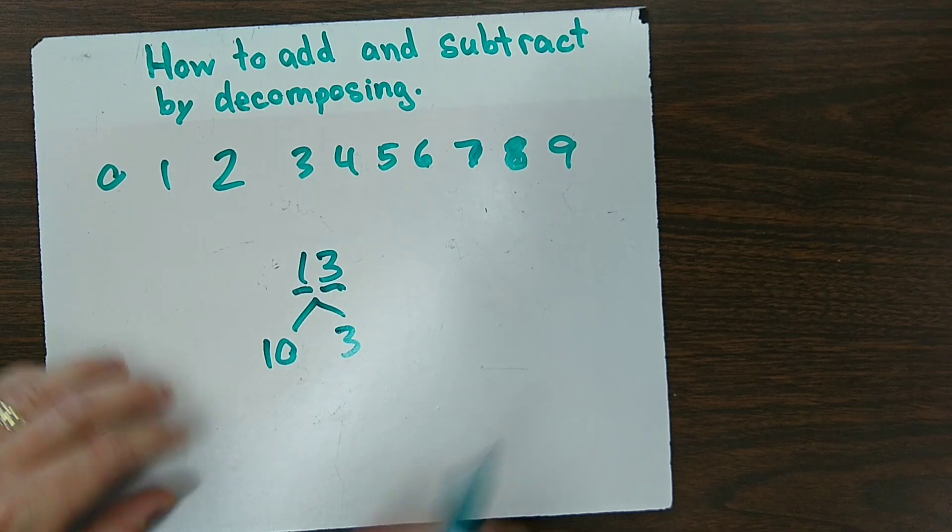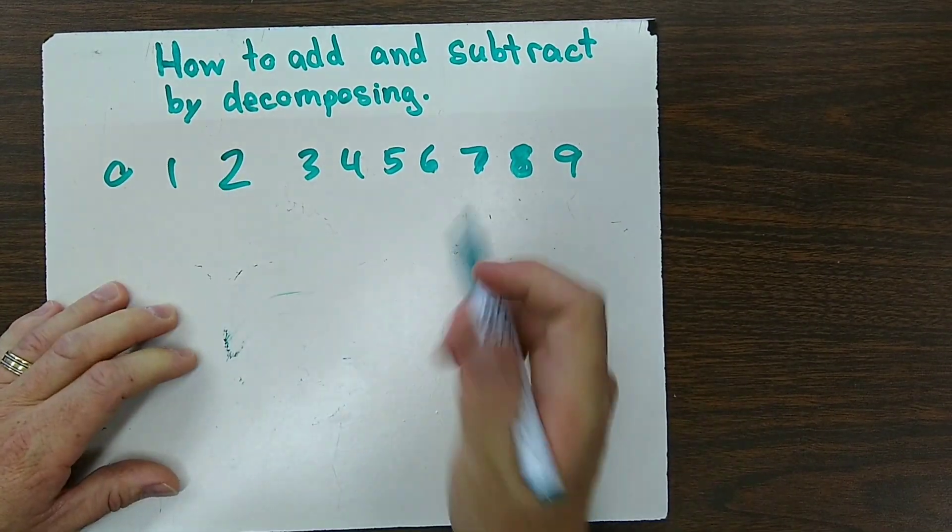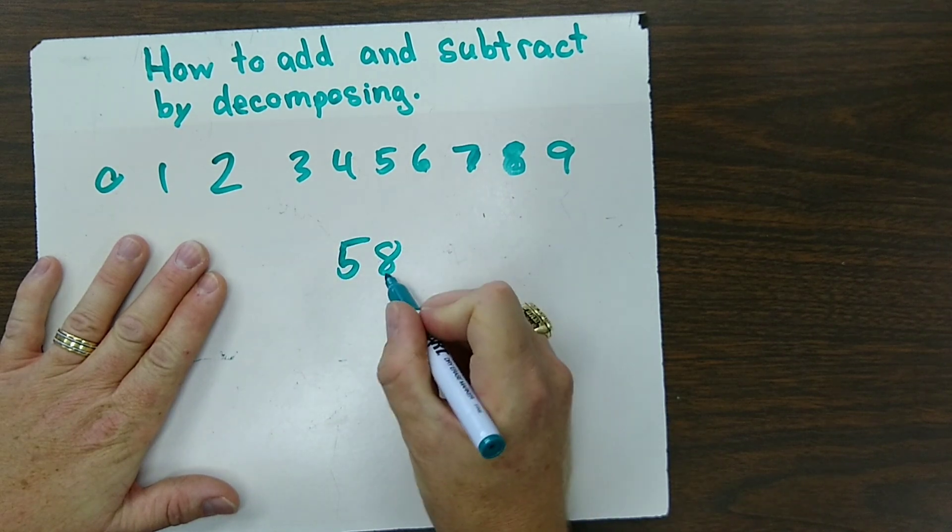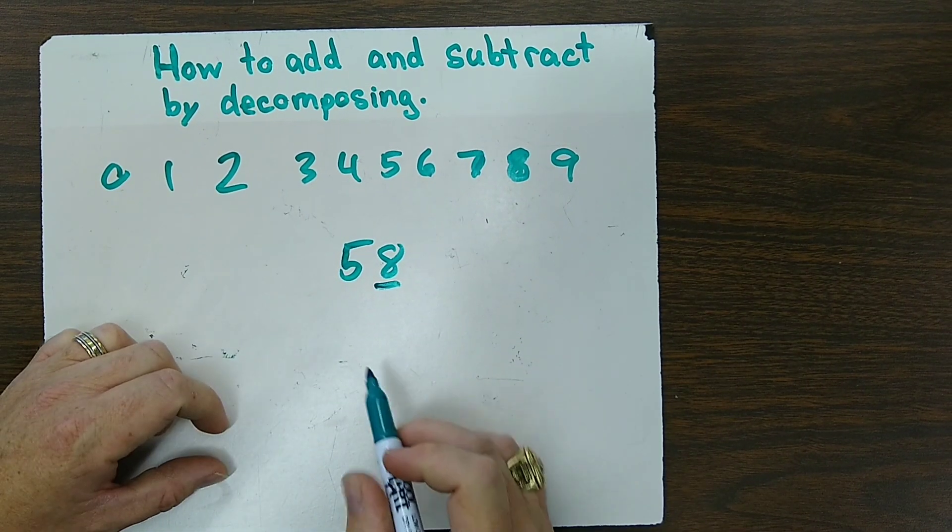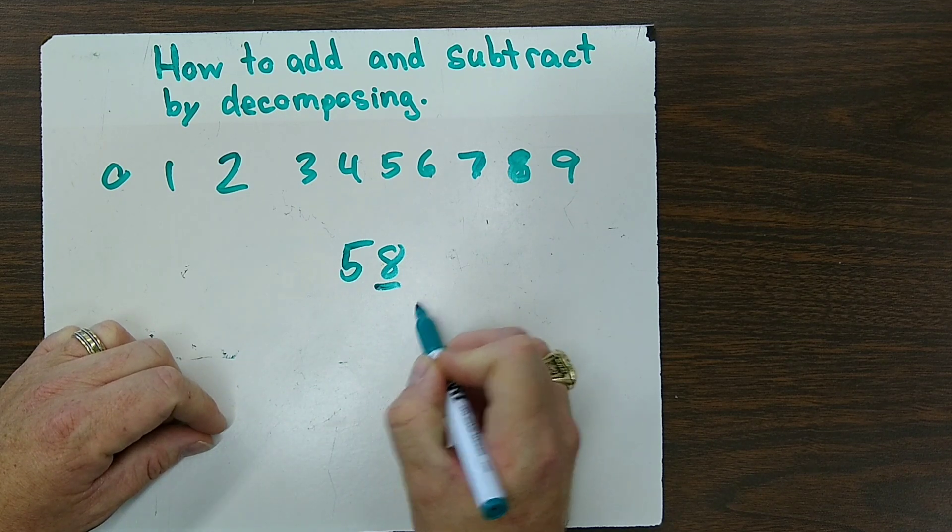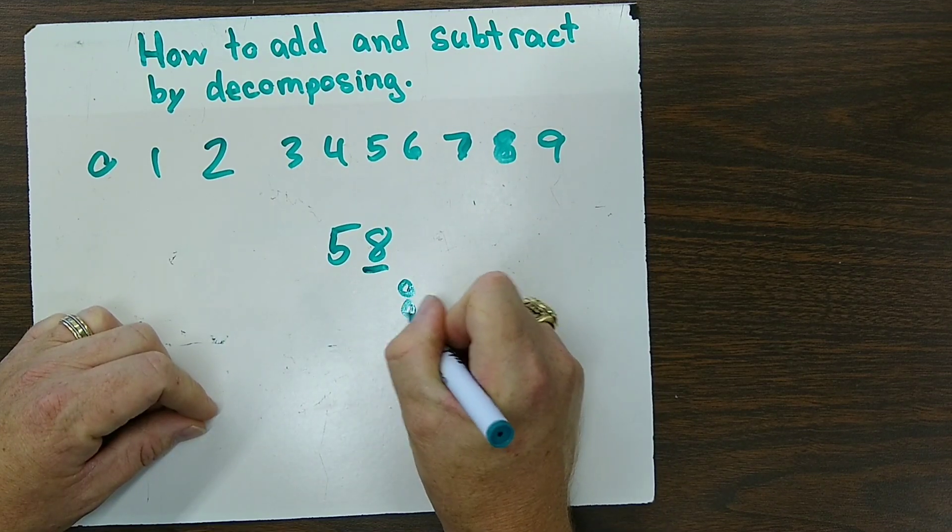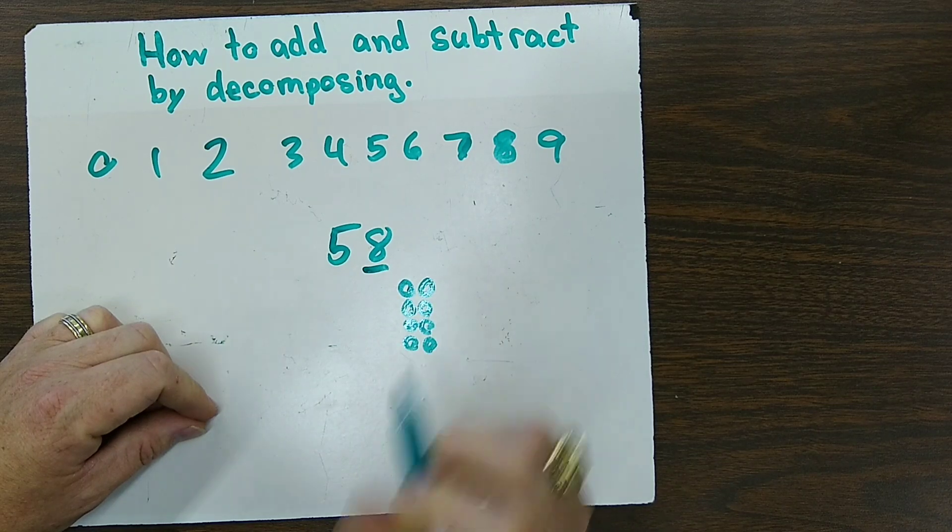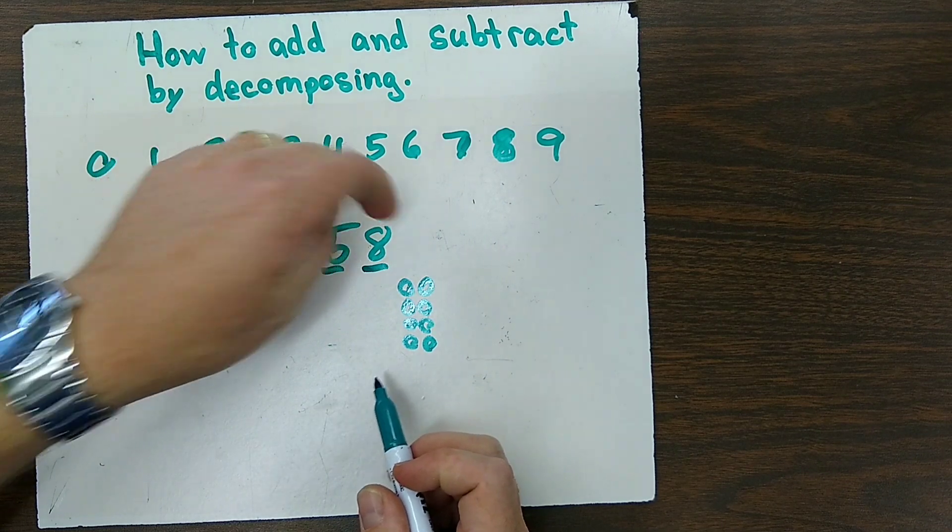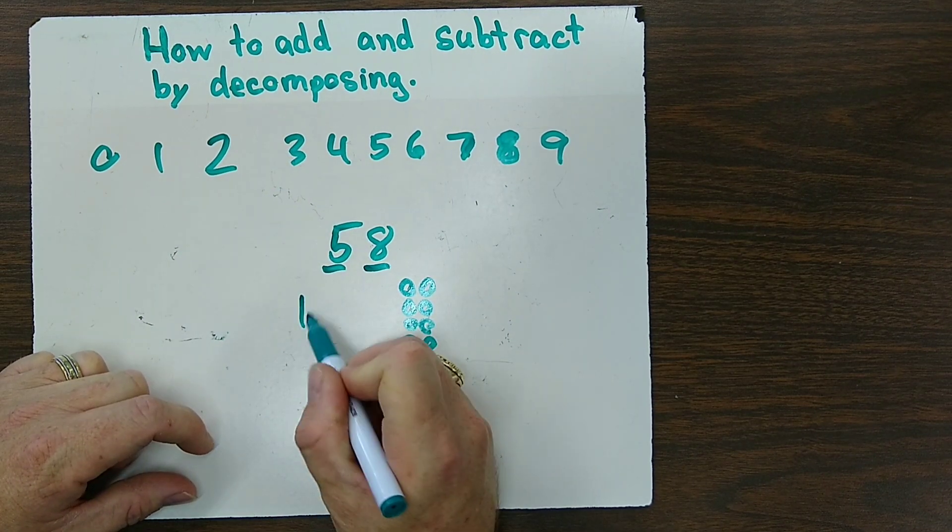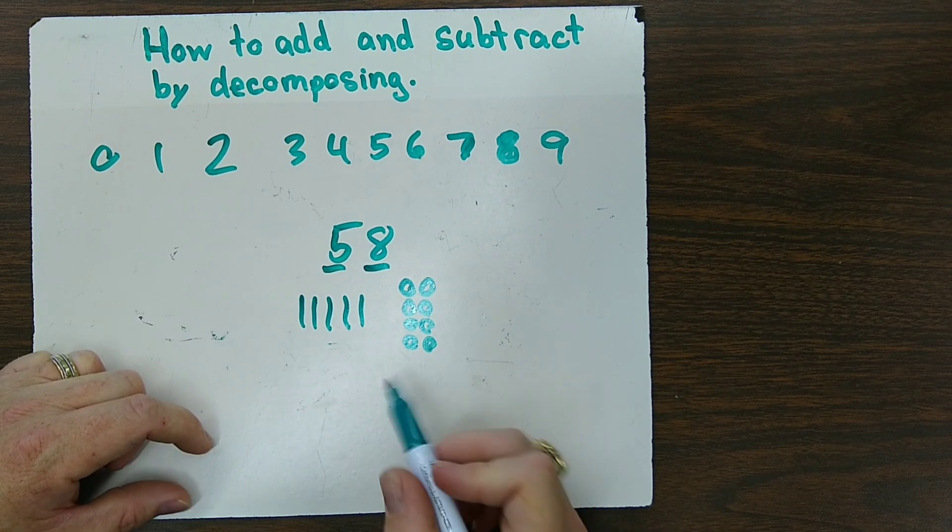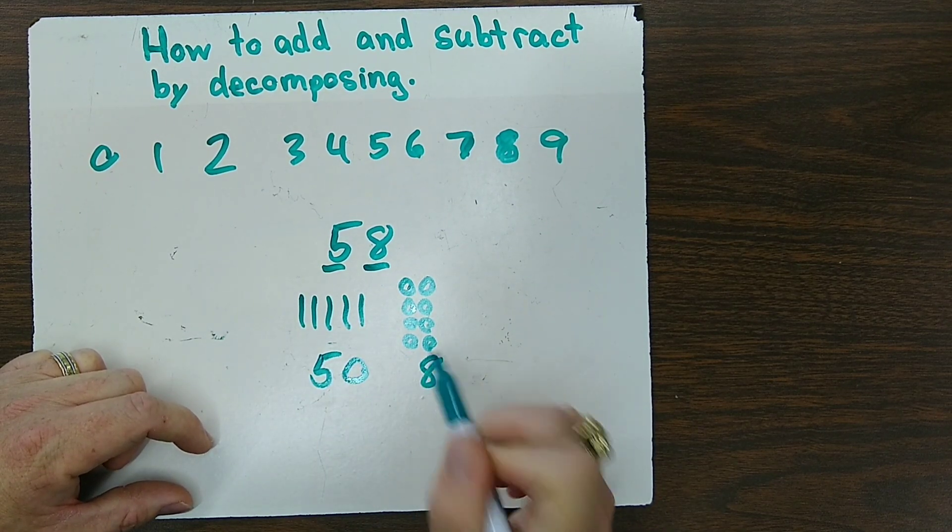So let's take a look at some more. If you were working with 58, the value of the eight is based on the place that it's in. It's in the ones place, so it's worth only eight ones. So we can draw it out by going 1, 2, 3, 4, 5, 6, 7, 8. And the 5, since you're saying 58, the value of the 5 is 50: 10, 20, 30, 40, 50. So that's how you could draw 58, or you could write out 50 and 8.